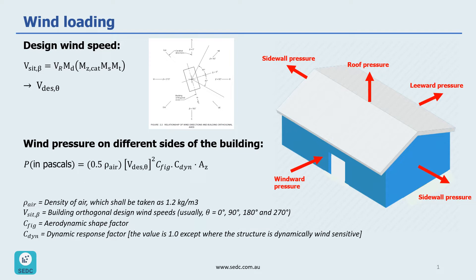A conservative approach is to design the structure using the wind speed and multipliers for the worst direction. For example, if we have a building located on a hill, then it may be easily checked that V_side and beta on the exposed face would be the worst case. To simplify the design, this value could then be used as design wind speed for all directions on this building.